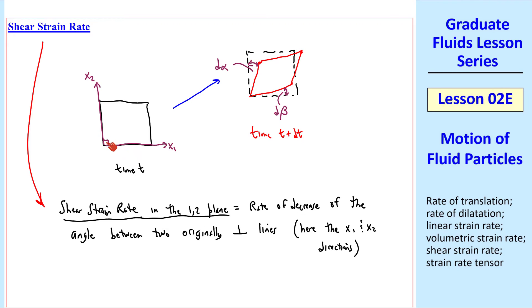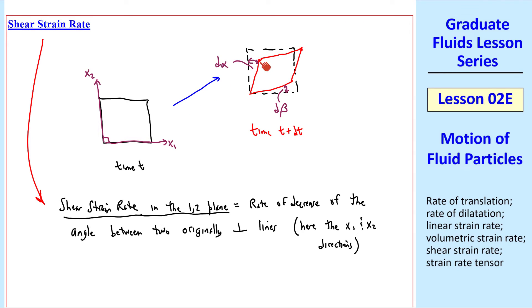Since this is defined as a rate of decrease rather than increase, you can see that the angle has decreased by d alpha and by d beta. So the rate of this change is d alpha dt plus d beta dt.